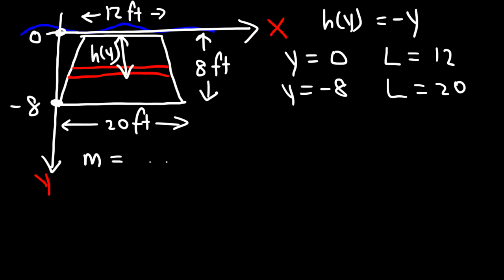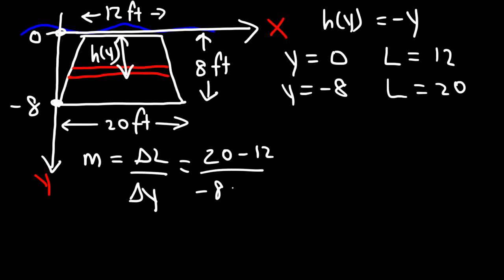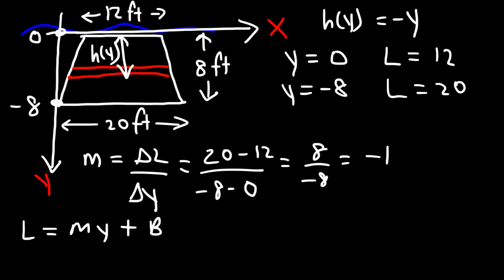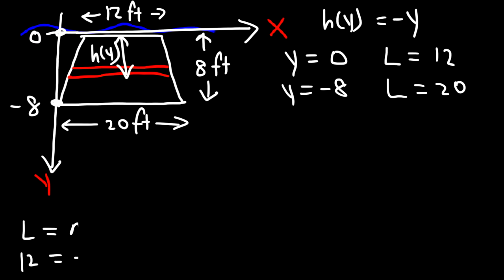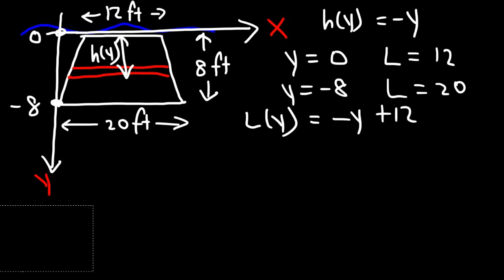The slope is (20 minus 12) over (negative 8 minus 0), which is 8 over negative 8, so the slope is negative 1. Using l = my + b, with l = 12 at y = 0, we can see that b = 12. Therefore l(y) = negative y plus 12.